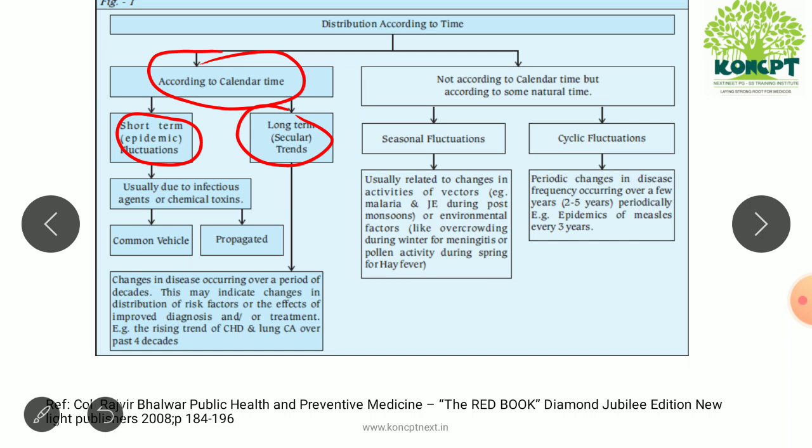In an epidemic, which usually occurs due to infectious agents and chemical toxins, it is either a common vehicle or a propagated epidemic — these two are the major types. According to non-calendar time, there are also seasonal fluctuations and cyclic fluctuations.